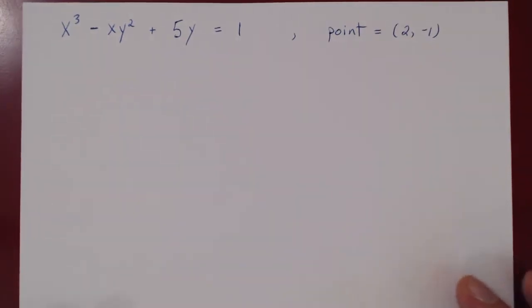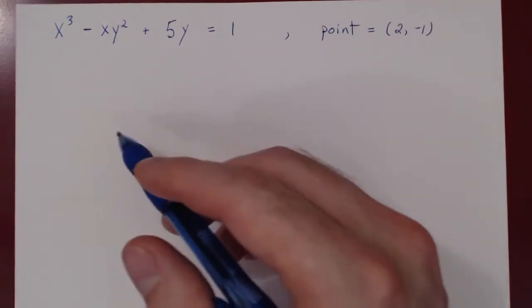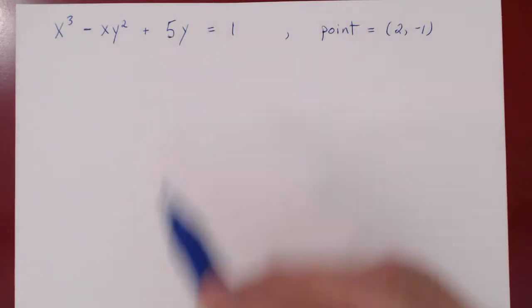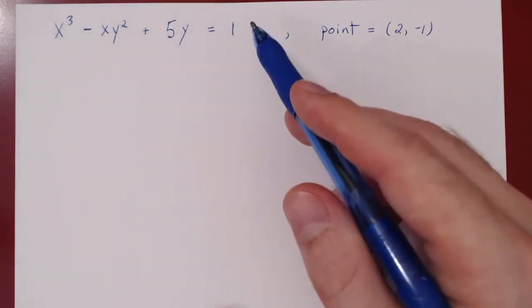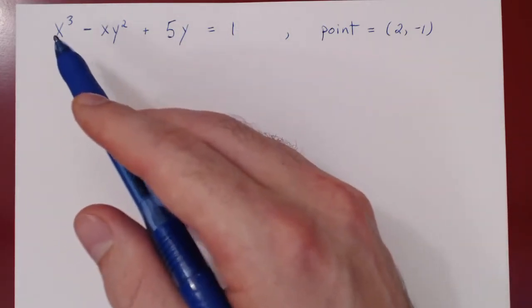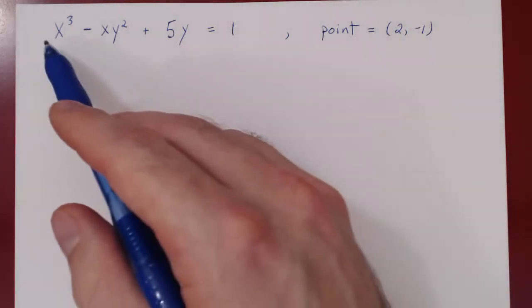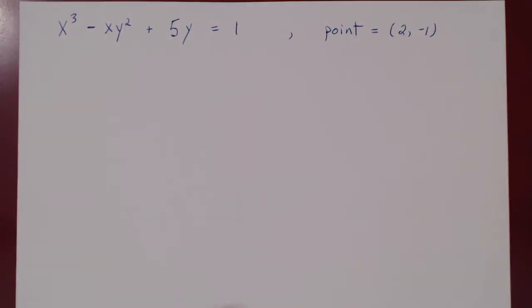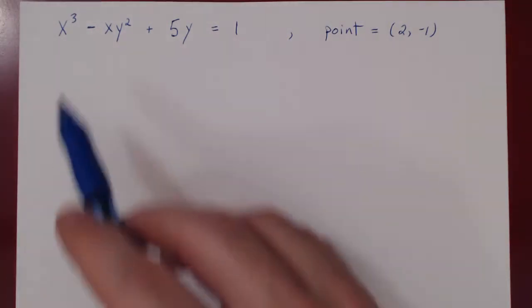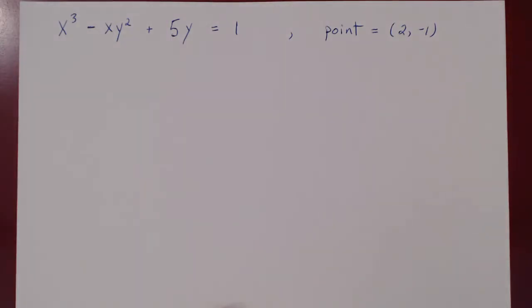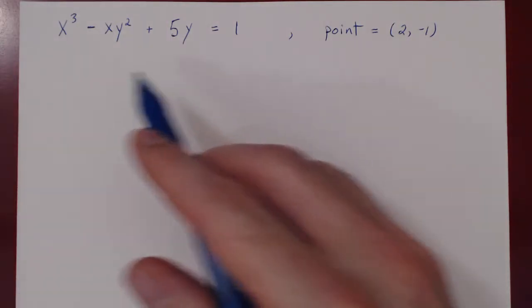When you give an equation for a curve, what that means is that the points on the curve are the solutions to this equation. It's not clear what this curve may look like. If you plot all the points — all values of x and y that satisfy this equation — you could use Maple to show you an accurate sketch of what this curve looks like in the xy plane. But for us, we don't need to actually visualize the curve.